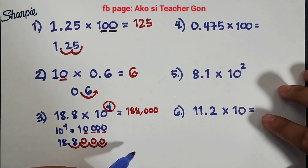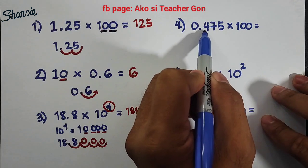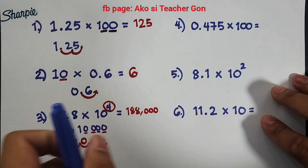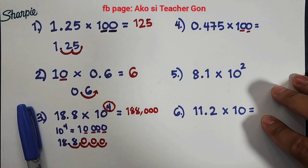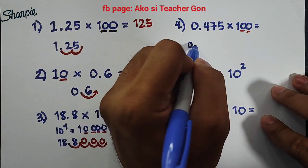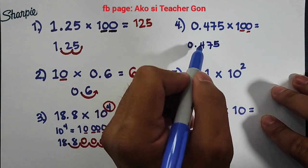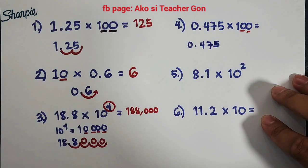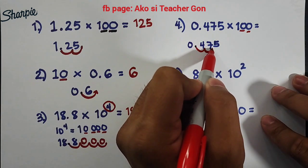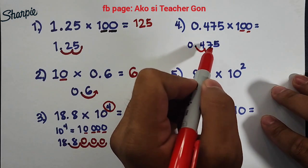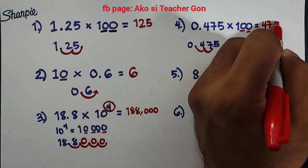Let's move on with item number 4. For number 4, we are given 0.475 times 100. We have 2 different zeros — 1 and 2. Meaning your 0.475 decimal point will be moved 2 times — 1 and 2. So it stops there. Therefore, the correct answer is 47.5.